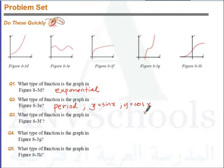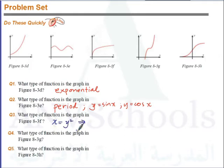Question 3: what type of function is the graph in Figure 8-3F? This is the inverse of a power function. It's like x equals y squared — an inverse of a power function. So that could be y equals square root of x. It's not logarithmic because it touches the y-axis.